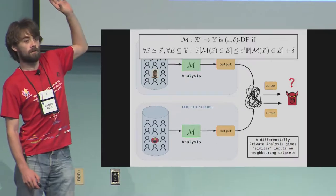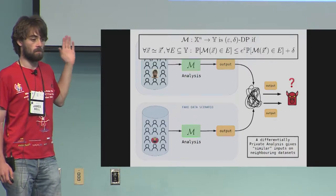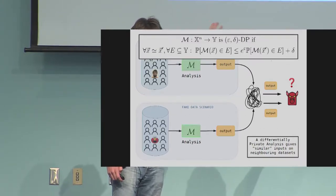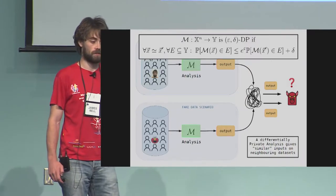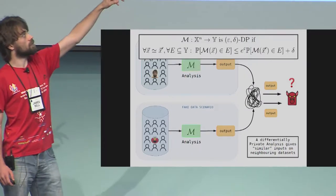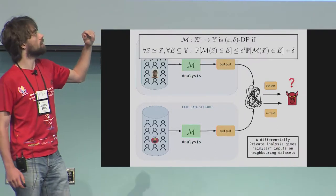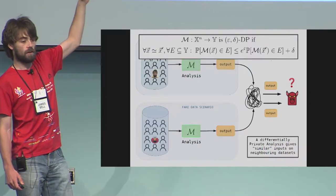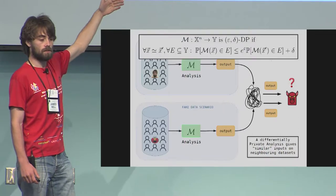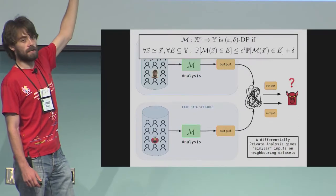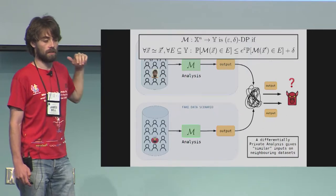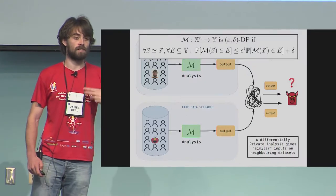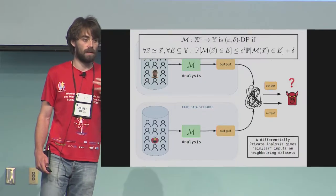So what's this saying? X and X' are two databases that differ in one place, and we're talking about the probability that any event happens on the output of the analysis. You should think of delta on the end as being some cryptographically small parameter, like the statistical distance. If you think of that as being zero, the condition becomes just saying that the likelihood ratio between database X and database X' is bounded by e to the epsilon. This somehow says the adversary can't learn too much about any one person with too much confidence.